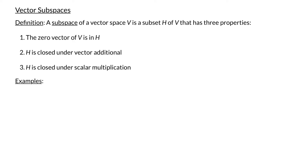In our last video on vector spaces, we learned that it's quite tedious to check all of the conditions of a vector space. Luckily, if we want to check that some subset of a vector space V is a subspace, then all we have to do is check three properties.